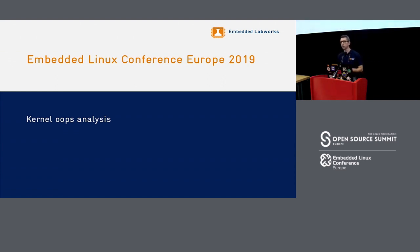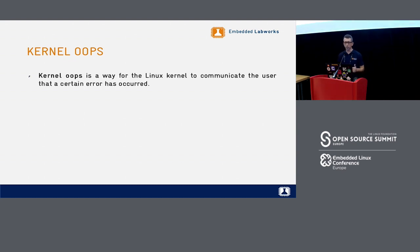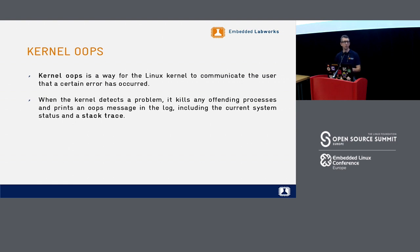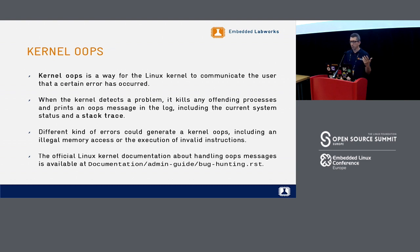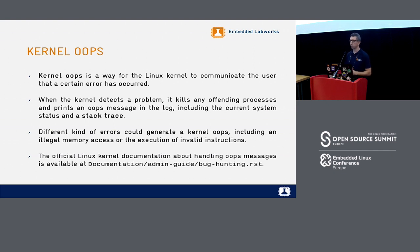Now I'll start talking about kernel oops analysis. Kernel oops is a way for the kernel to tell us that something bad happened. When the kernel detects a problem like an invalid memory access — something it can't continue executing from — it will print a kernel oops message. That message has a lot of useful things for the debugging process. Sometimes the kernel oops generates a kernel panic, and when that happens the system just stops everything.